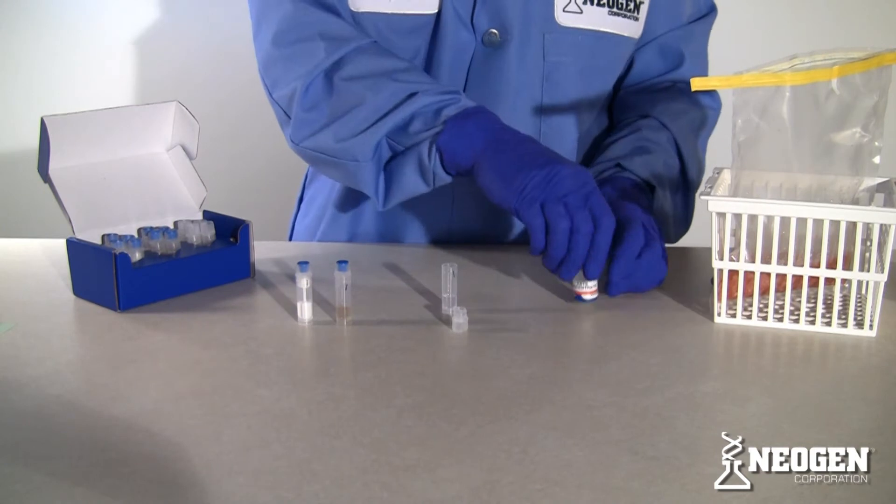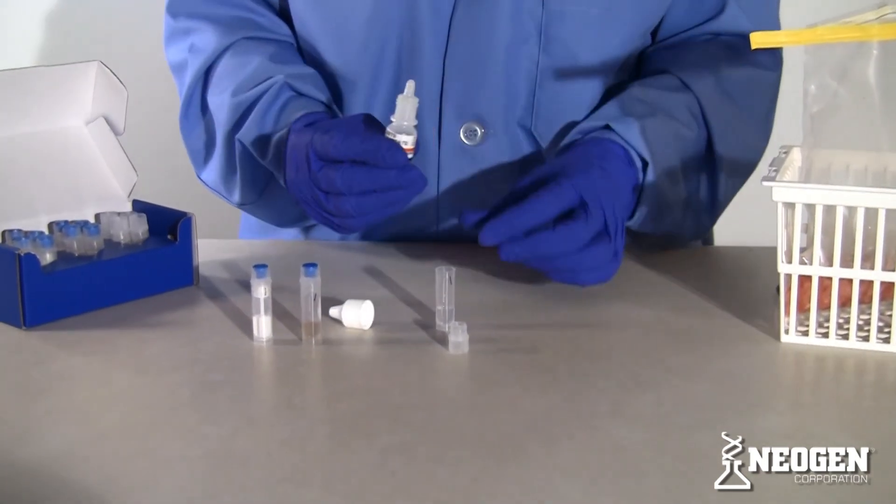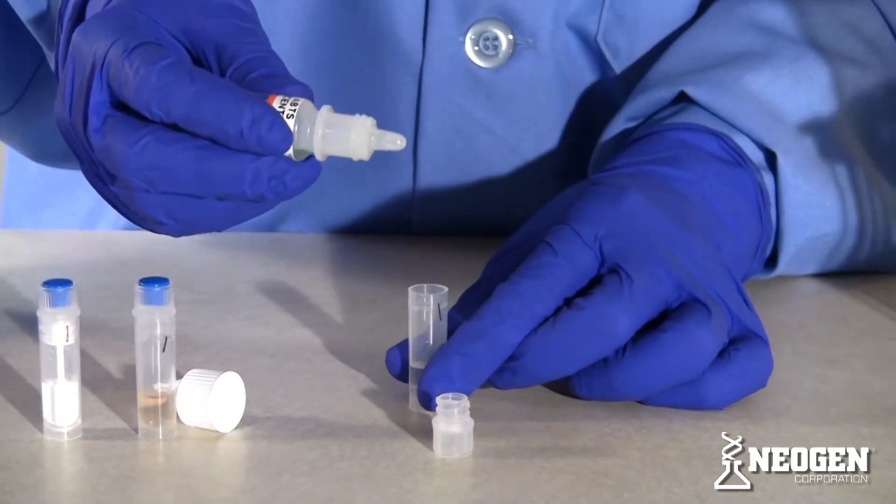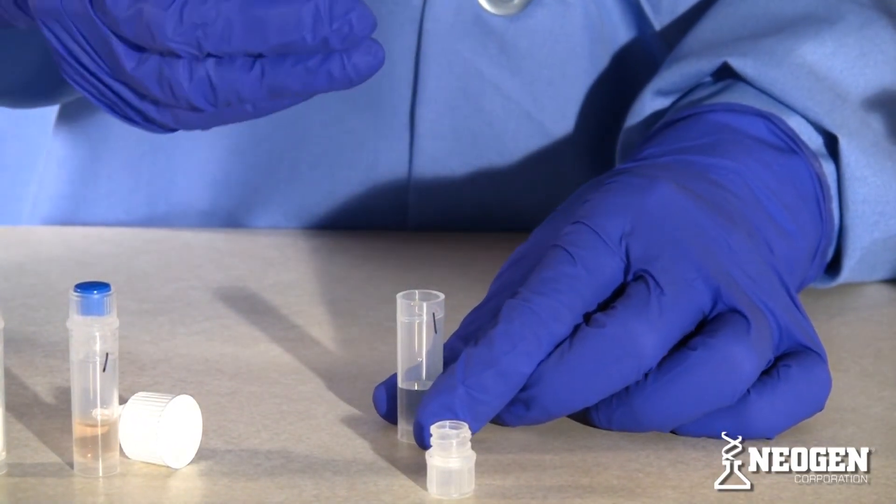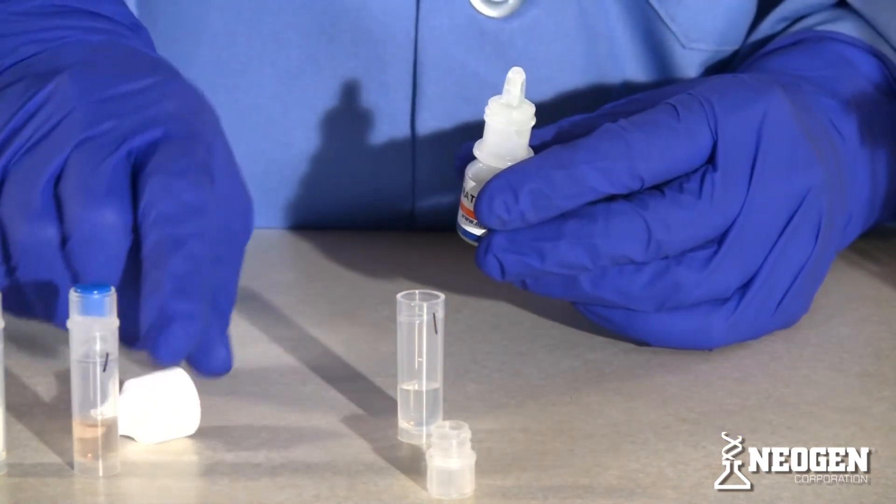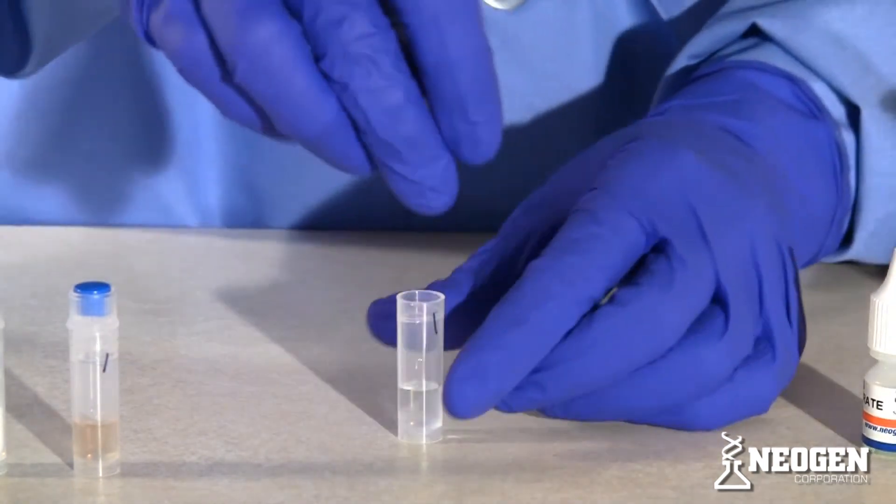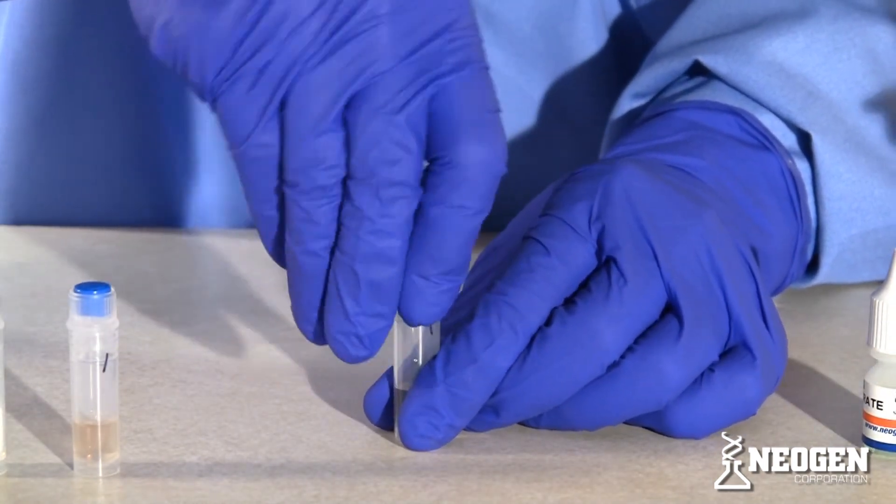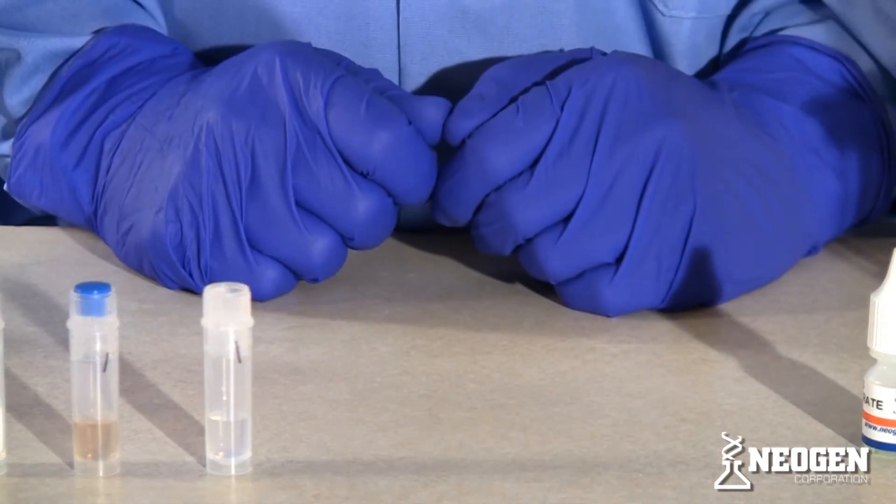Prepare the color development reagent tubes by adding one drop of concentrated ABTS solution to the required number of color development reagent tubes and replace the caps. When using the dropper bottles, add drops by carefully inverting and squeezing gently so that a drop slowly forms at the end of the nozzle and falls into the appropriate tube.